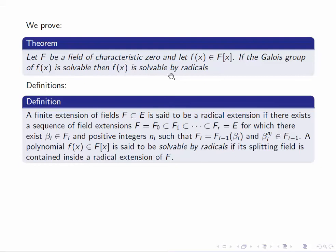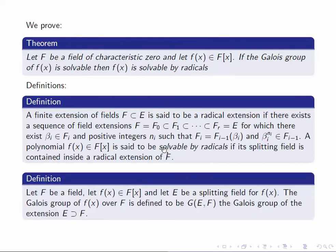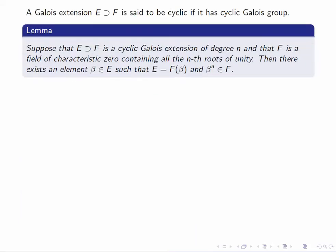Recall the definition of a radical extension: a finite extension of fields is radical if there exists a sequence of intermediate fields for which each field is an extension of the previous one by an nth root for some n. Recall also that when we're talking about the Galois group of a polynomial, we mean the Galois group of the extension of F up to the splitting field. Note also that we say a Galois extension is cyclic if it has a cyclic Galois group — a concept we'll need quite a bit.